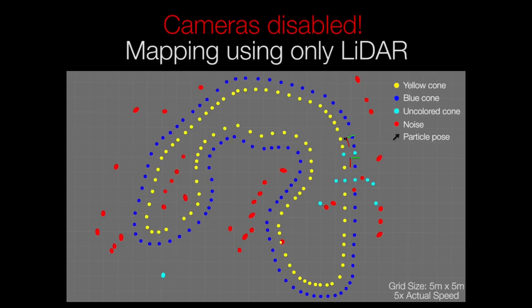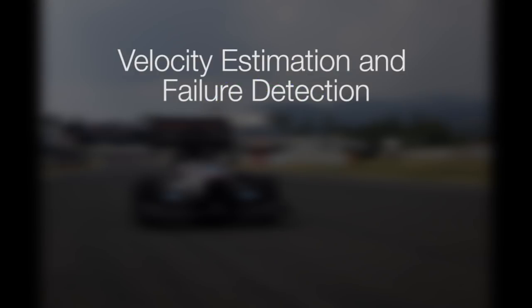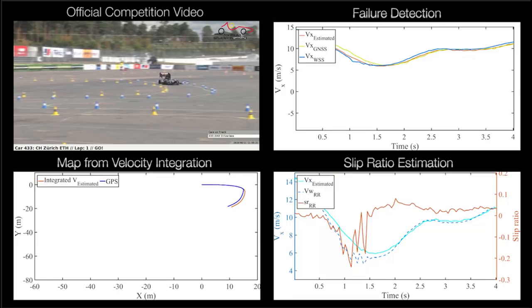When a loop closure is detected, the track boundaries are computed and the algorithm switches to localization. The following sequence shows data from the competition.